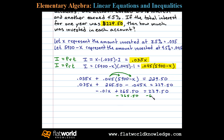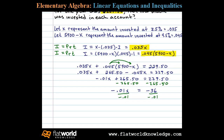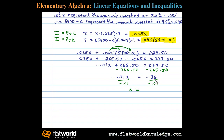Now we can isolate the term with X by subtracting 265.50 on both sides. That leaves us with negative 0.01X equals negative 36. Then, dividing both sides by the coefficient of X, negative 0.01, we're left with X equals 3,600.